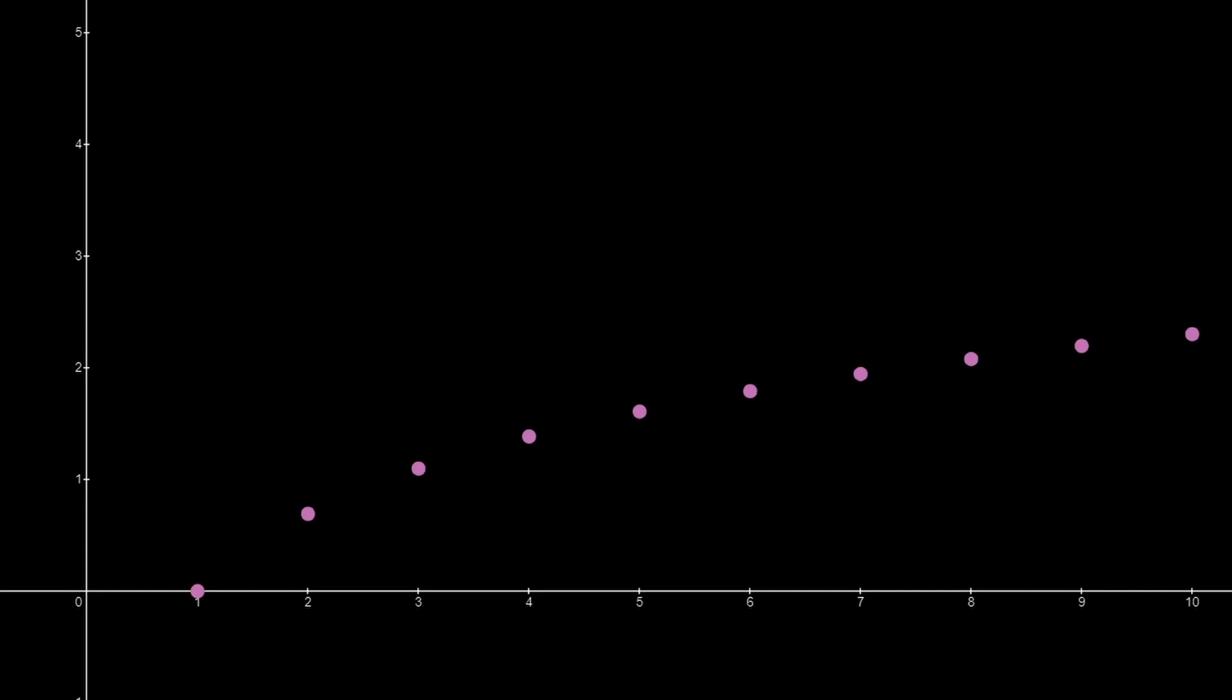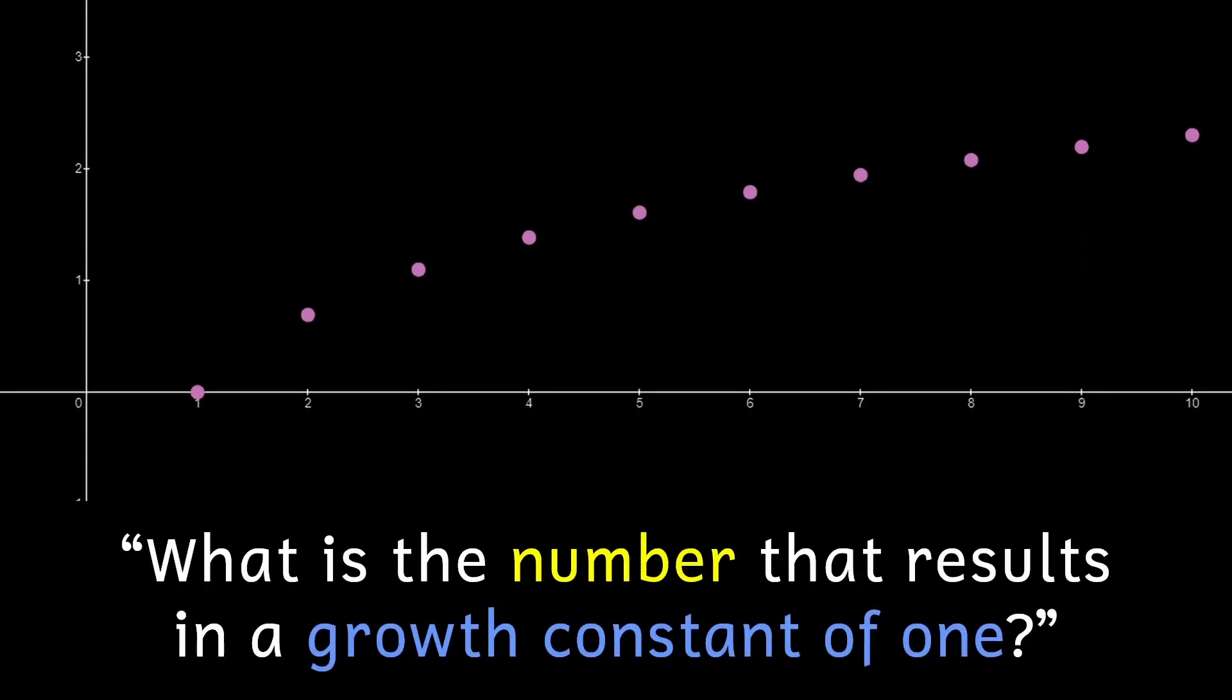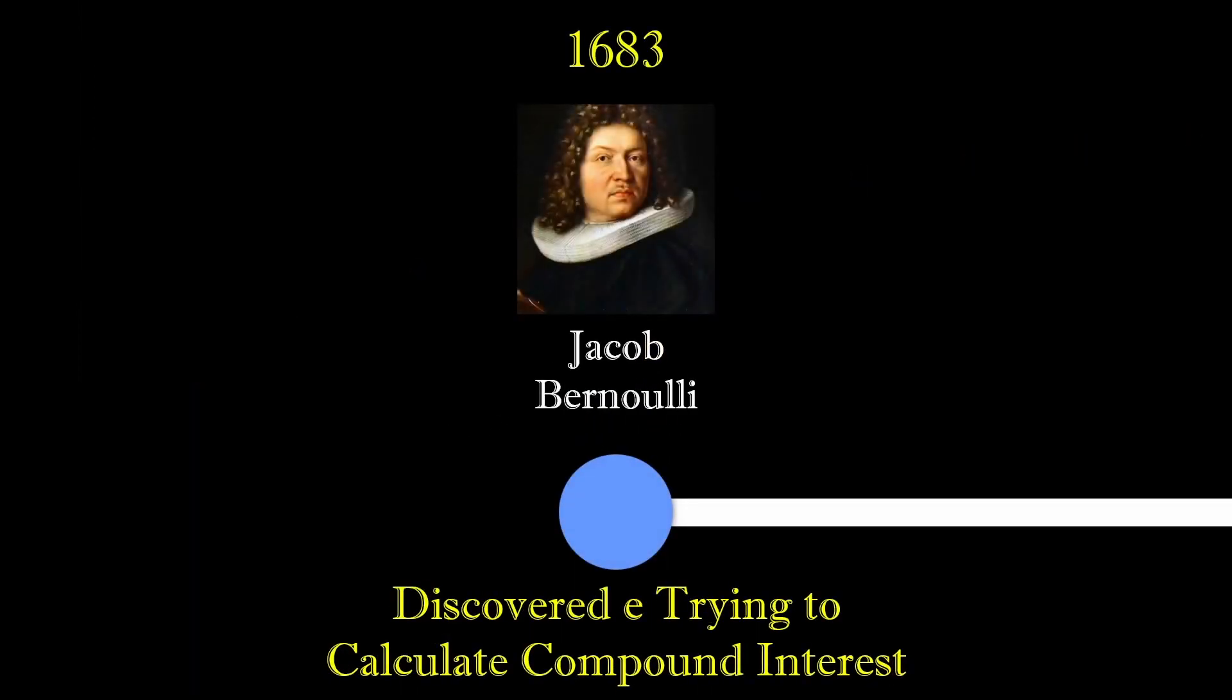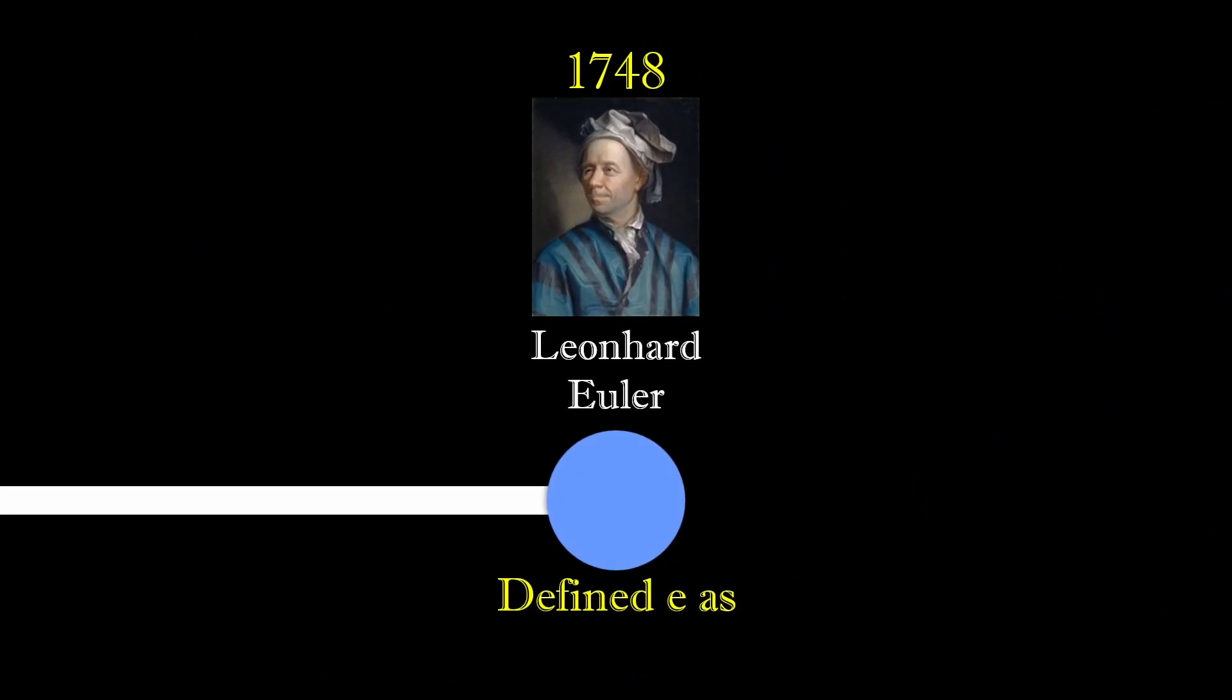Upon seeing this behavior of our constant, mathematicians wanted to answer one question. What is the number that results in a growth constant of 1? This question wasn't easy to answer, and it took until the 17th century just to approximate it.